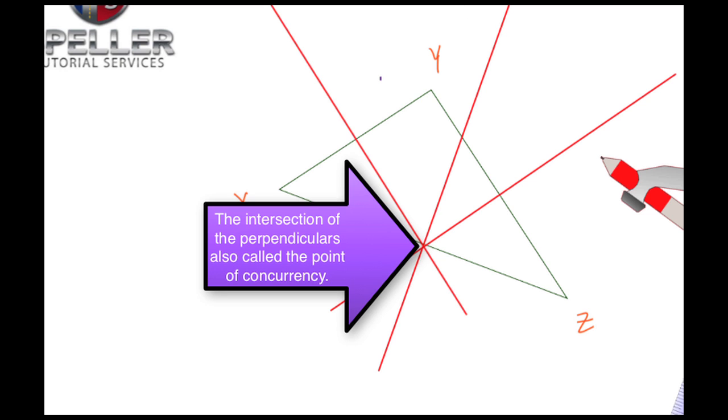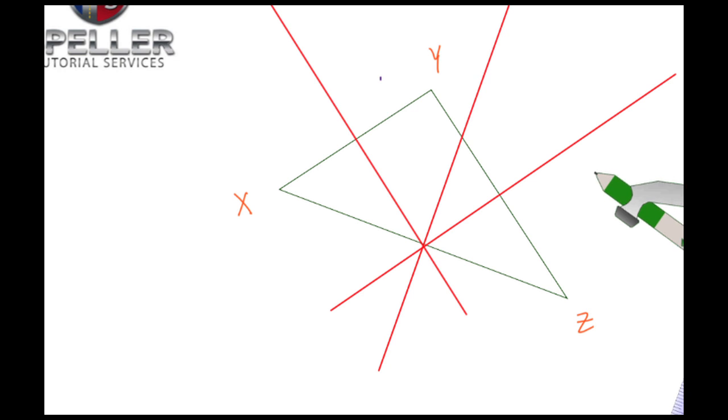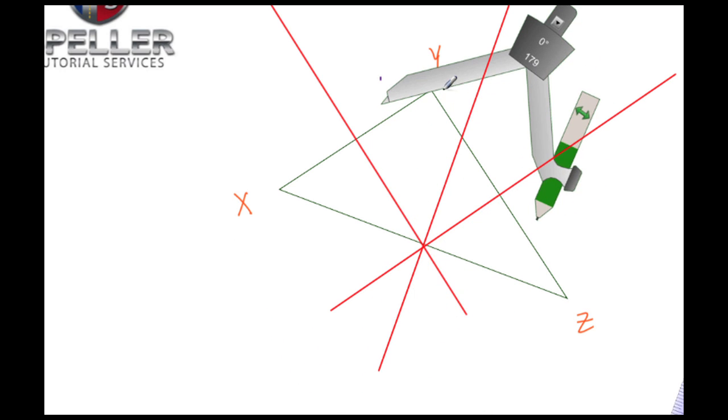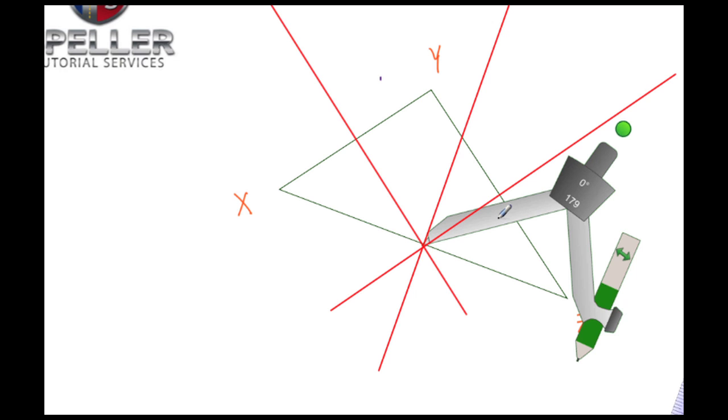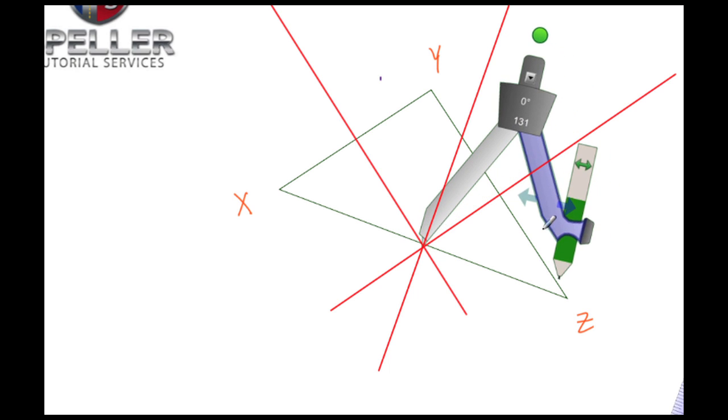Let's change the color once more, this time to a green color. What we want to do now is place the pointy end of our compass here on that intersection, and then take the writing end and place that on one of these vertices.